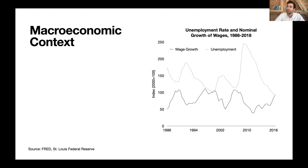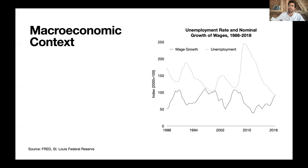We can think of this as a purely cyclical phenomenon. There's a general macroeconomic relationship between the unemployment rate (dotted line) and the nominal rate of wage growth (solid line) — they are inversely correlated. When unemployment is high, workers have less bargaining power; when unemployment falls, workers have much more strength in the labor market.